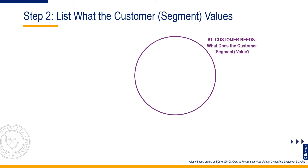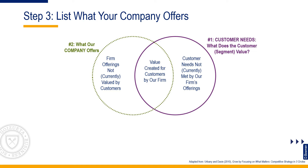Step 2: List what the customer or customer segment values. The first circle contains the full list of customer needs as best you can determine them. Sometimes it can be helpful to annotate their relative importance.